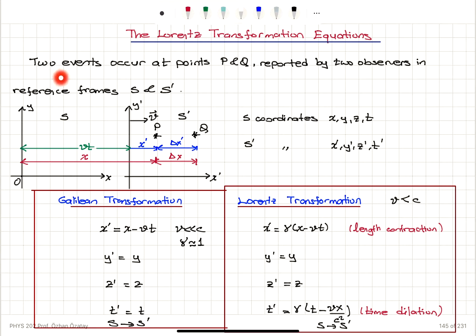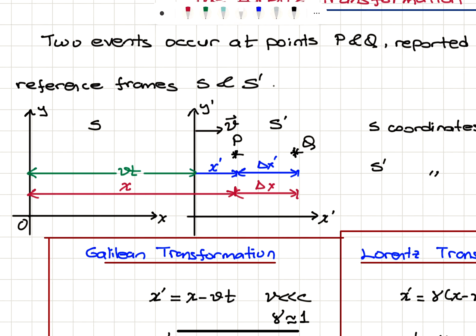Now, let's consider two events occurring at points P and Q reported by two observers in reference frames. The reference frame S is at rest, and S prime, the reference frame S prime, is moving with a relative speed V with respect to S on the x-axis. The event at point P is reported to be at position X by the S reference frame and at X prime by the S prime reference frame. The event at Q is reported to be at X plus delta X, and by S prime reference frame, X prime plus delta X prime.